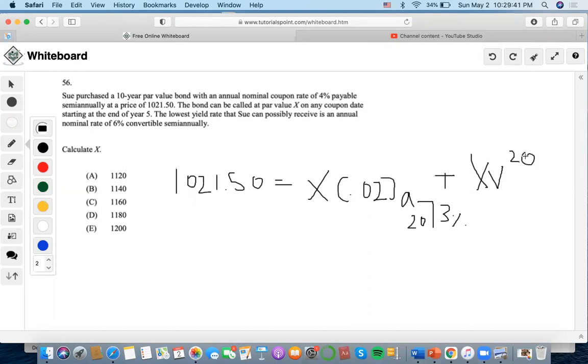Now let's calculate X. Okay, 6% convertible semi-annually, so let's input 3%, but first let's solve this part.